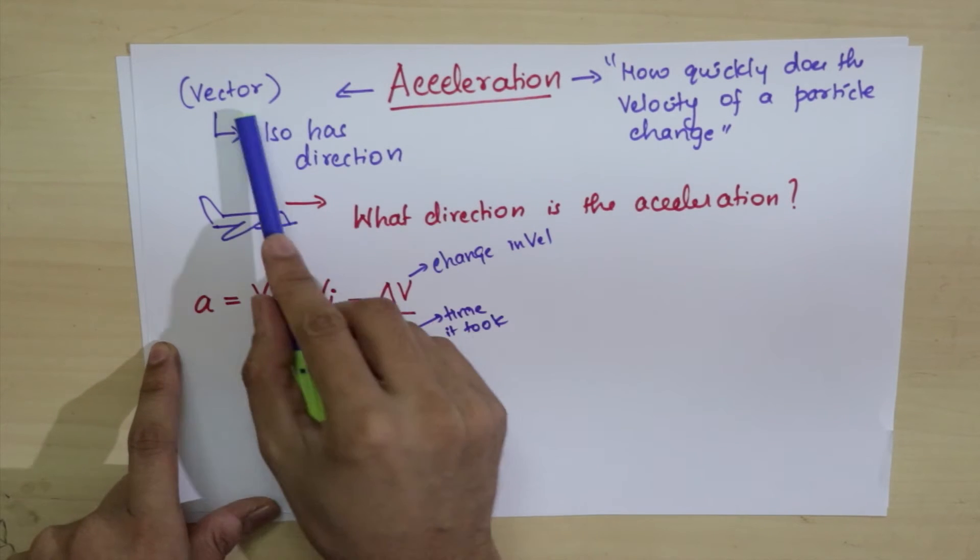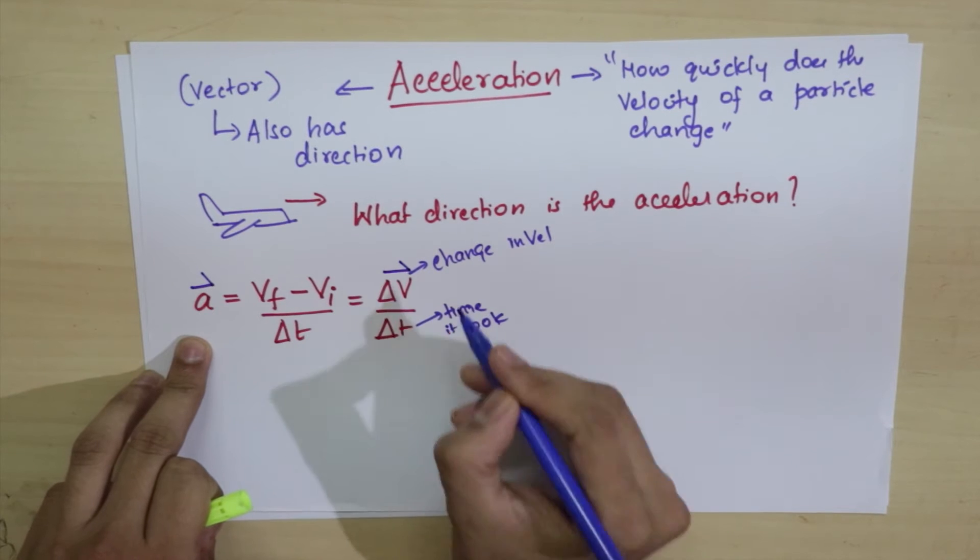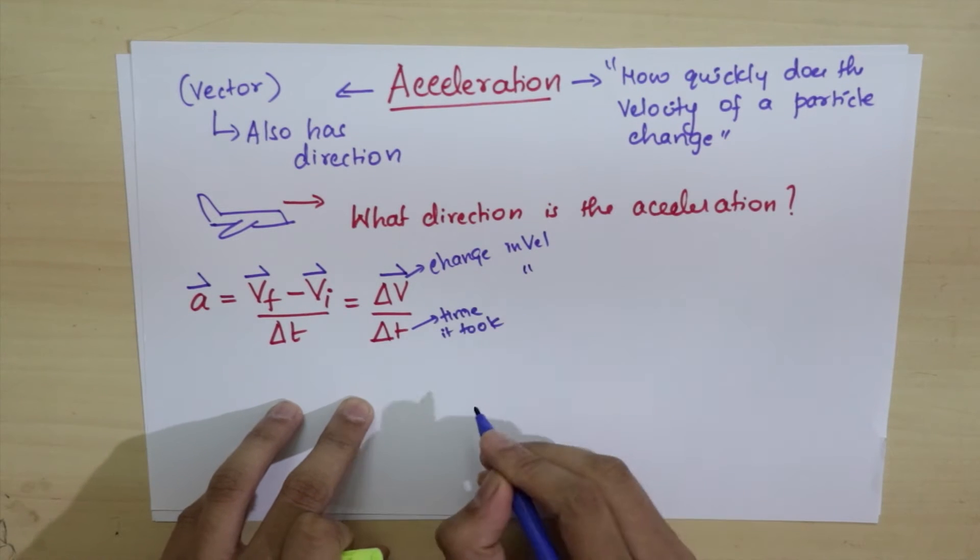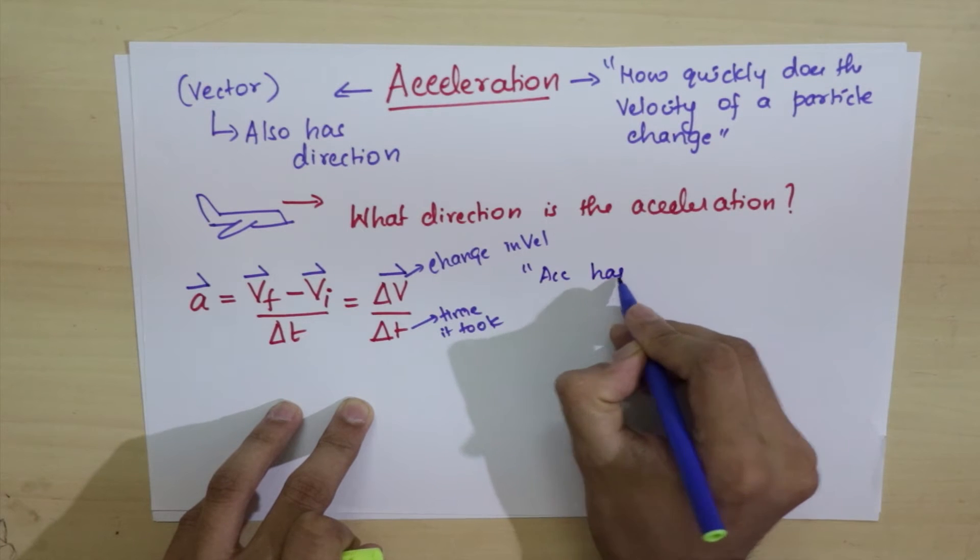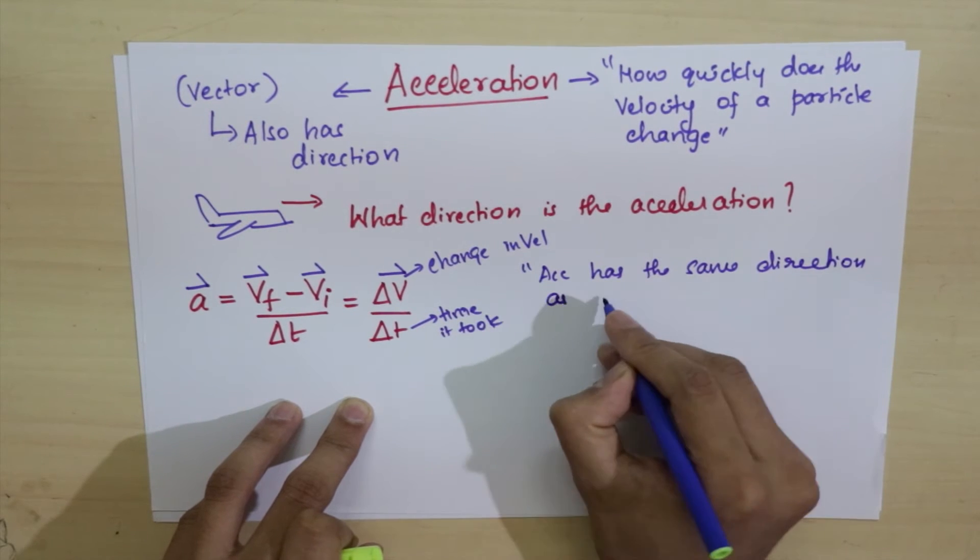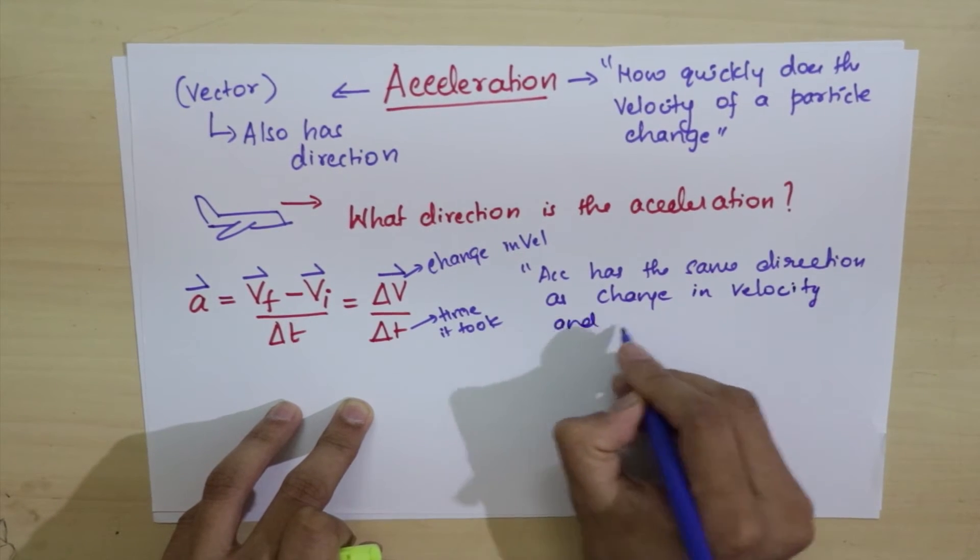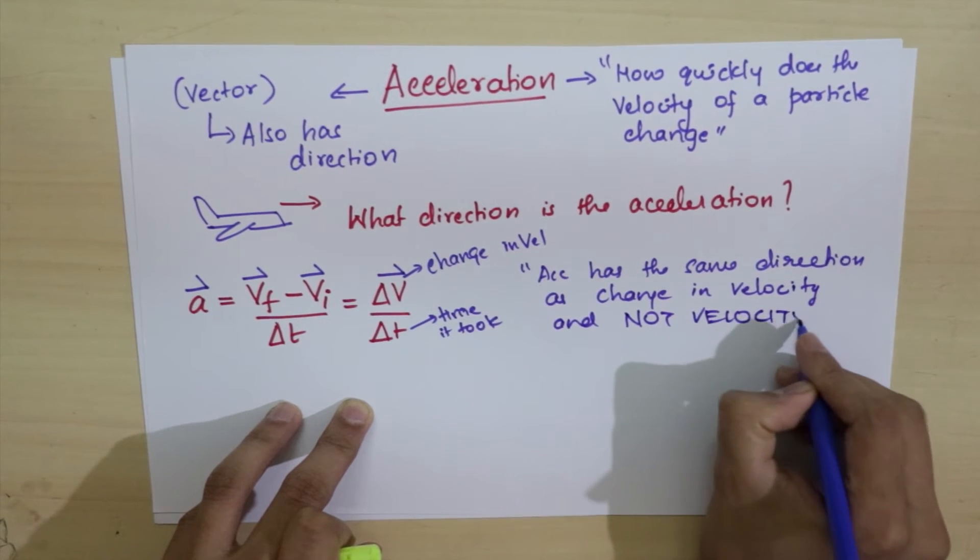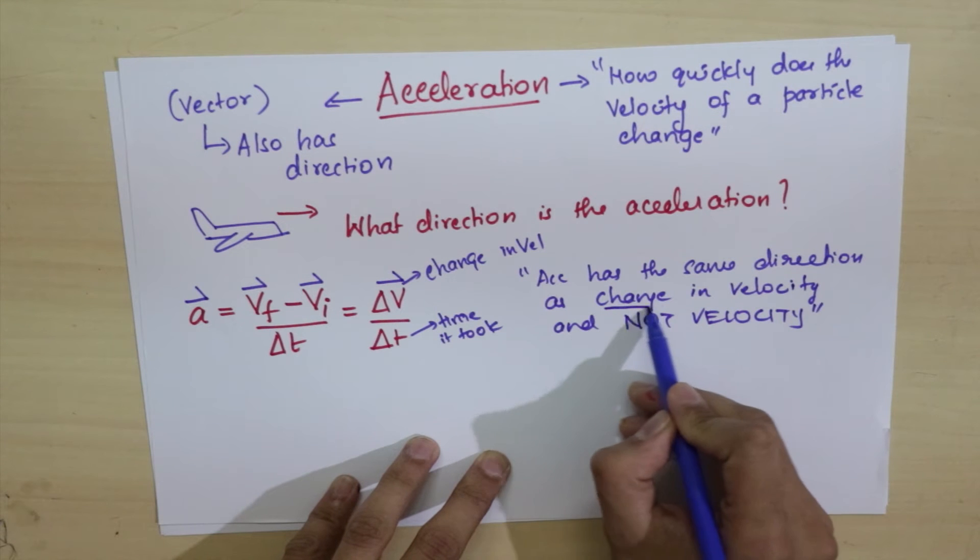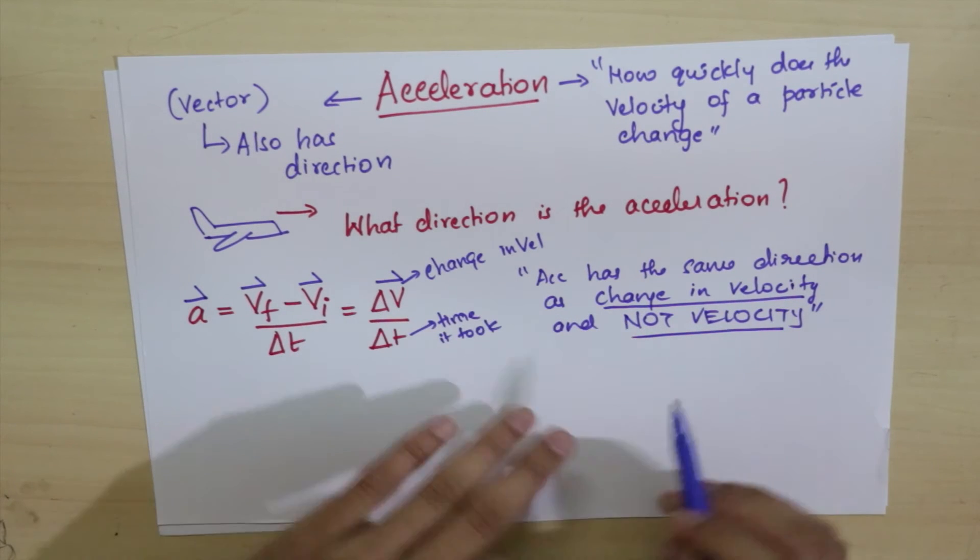Since acceleration is a vector, I should put arrow marks on this. The acceleration vector has the same direction as the change in velocity. And that's what makes it tricky. Acceleration has the same direction as change in velocity and not velocity. I cannot stress this more: acceleration depends on change in velocity, not velocity itself. Change in velocity and velocity are not the same things.